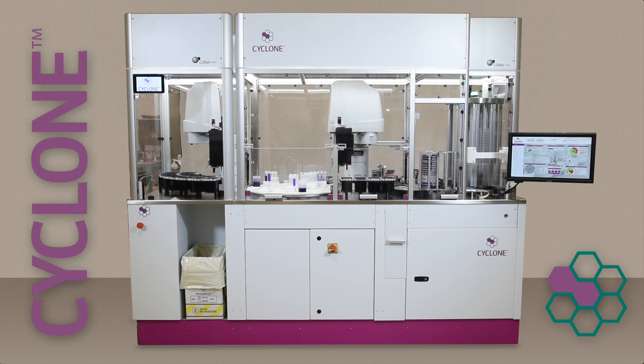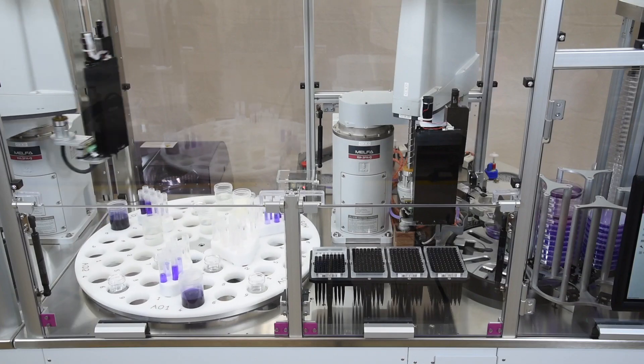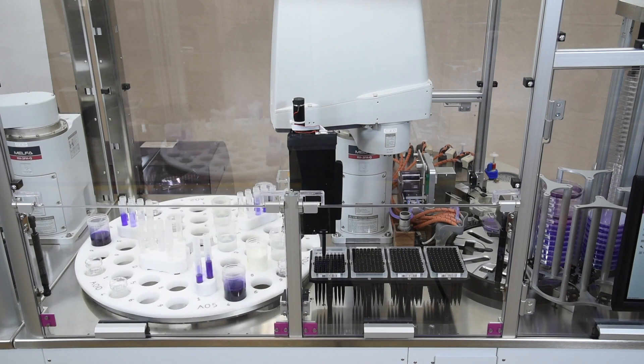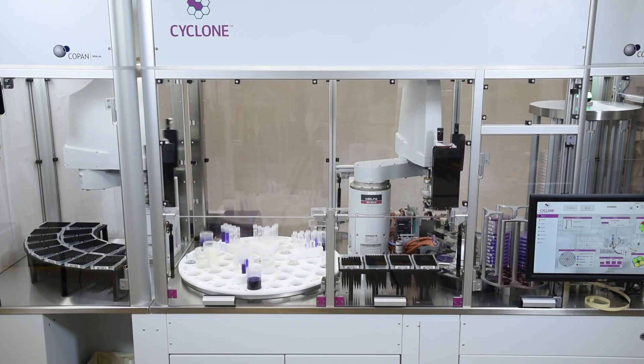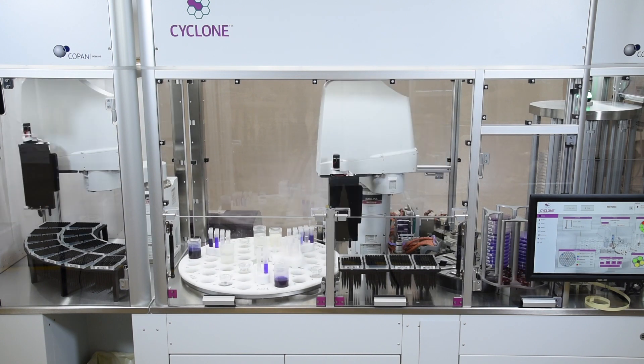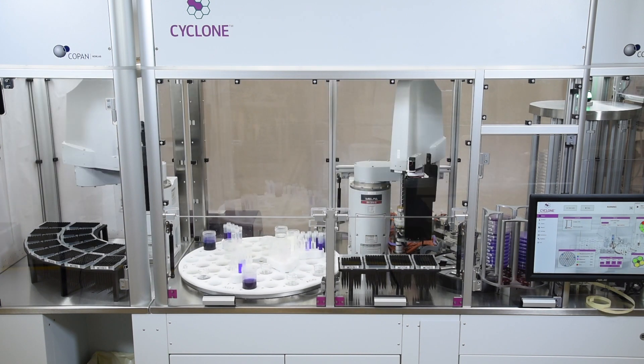The Cyclone is a fully automated instrument for pour plating, spiral plating, and spreading liquefied samples for the food safety industry. Cyclone is ideal for laboratories wanting to increase their accuracy, reproducibility, and productivity while also reducing operational costs.